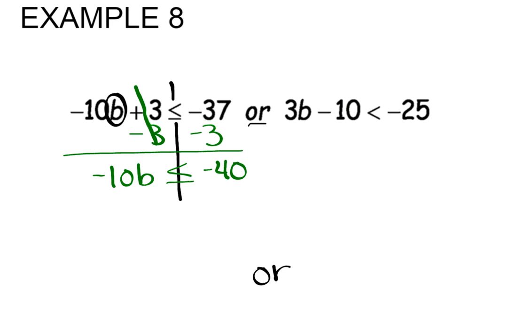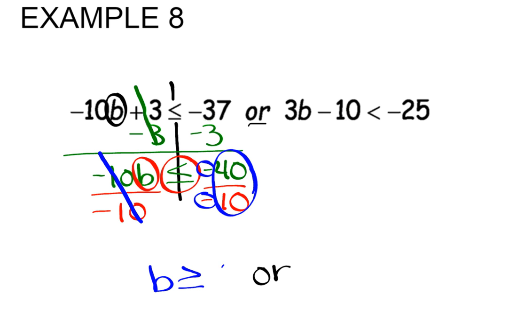The next thing we're going to do to isolate the variable B is divide by the coefficient negative 10. Whenever we multiply or divide by a negative, we need to remember to flip the inequality symbol. That's going to leave us with B, flipping the symbol is greater than or equal to, a negative divided by a negative is a positive, 40 divided by 10 is 4.